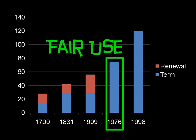In 1976, we added this thing called Fair Use, and we got rid of the renewal provision and provided the full term of copyright at that point for 76 years, and now all the way up to 120 years with the Sonny Bono Copyright Extension Act of 1998.